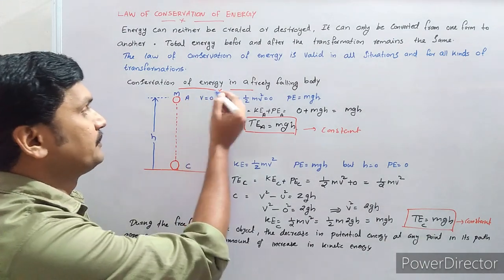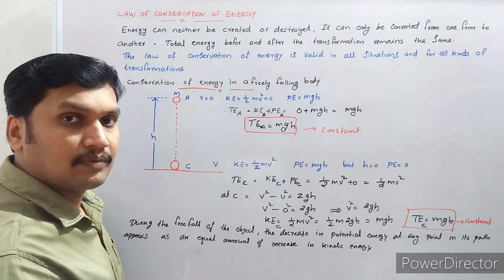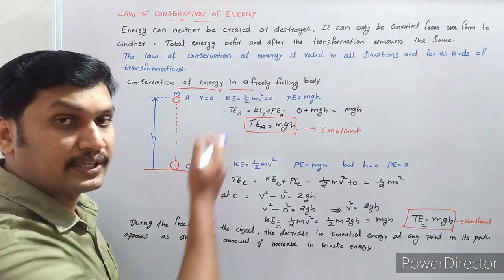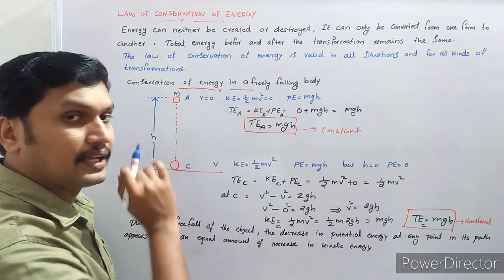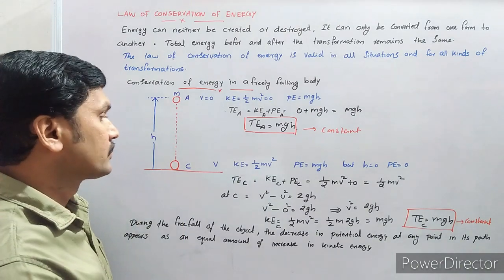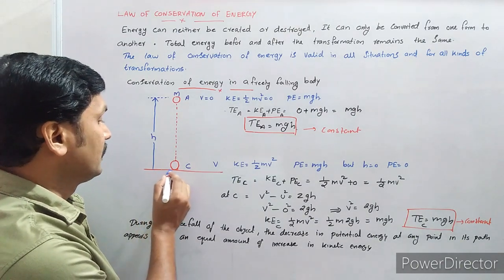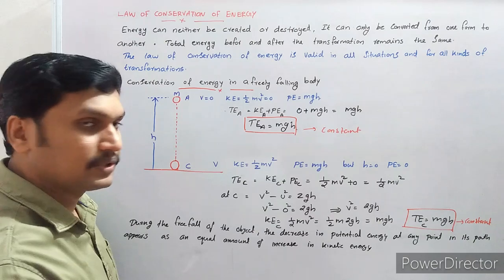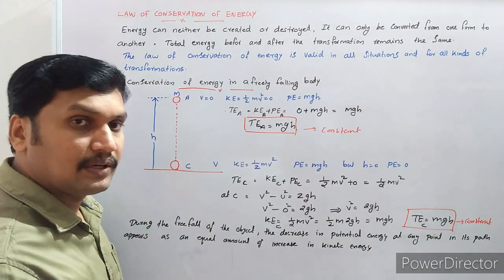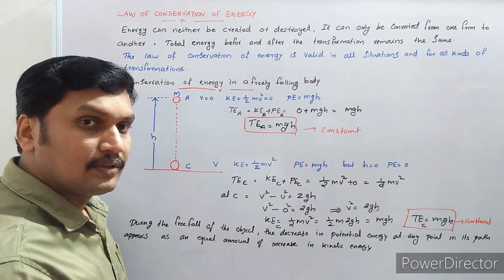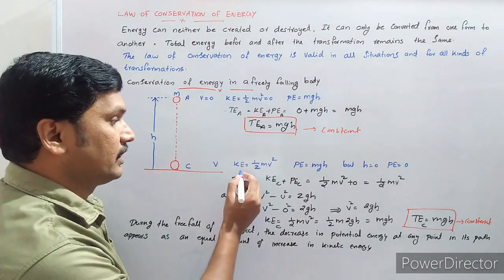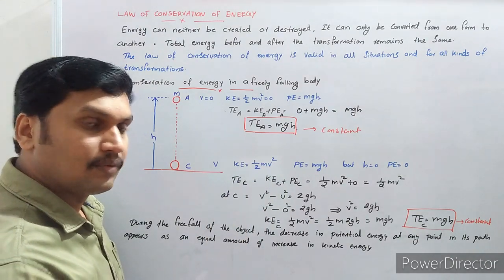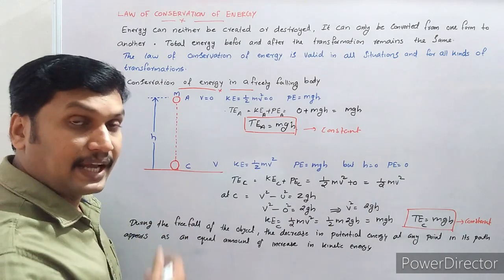Suppose you drop the object — initial velocity is zero and it falls under gravity; we call it free fall. The object falls under gravitational force. Suppose the object reaches point C, just before touching the ground, it has achieved a velocity V. It has gained kinetic energy; the kinetic energy is equal to half mV squared. Once it is falling down, its velocity gradually increases, and once it reaches the bottom point it has maximum velocity.